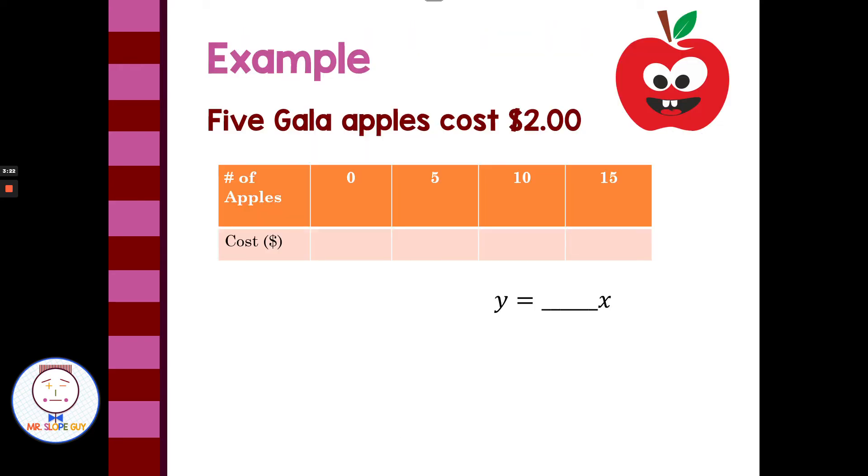Let's look at a new example. Five gala apples cost $2. If I fill in my table, five apples is $2, ten apples is $4, fifteen apples is $6, zero apples is zero dollars. For my equation, I have y equals two-fifths, two dollars for five apples. So x would be the number of apples as the input, and the output would be the total cost.